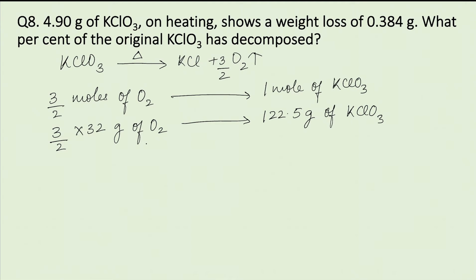Therefore, we can write that the amount of KClO3 that produces 1g of oxygen will be 122.5 divided by 48.